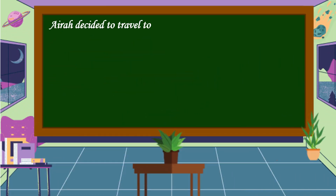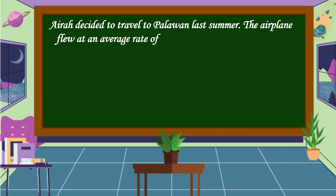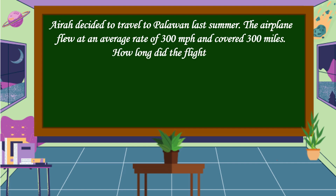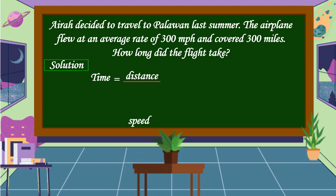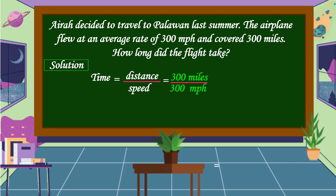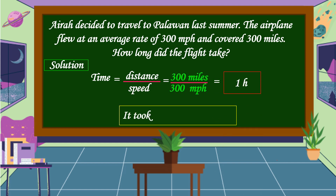I decided to travel to Palawan last summer. The airplane flew at an average rate of 300 miles per hour and covered 300 miles. How long did the flight take? In this problem, we're going to find the time. The formula for time is distance divided by speed. The distance is 300 miles and the speed is 300 miles per hour. So, 300 miles divided by 300 miles per hour equals 1 hour. Therefore, it took 1 hour for the flight.